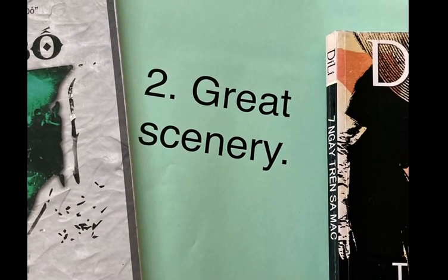The second element in common in these books is the great scenery. In Social Club 7, there are a lot of descriptions of the Saigon nightlife scene — a lot of nightclubs, the rainy city, things like that. Seven Days in the Desert takes place in rural areas, a lot of places with big houses and that kind of thing.